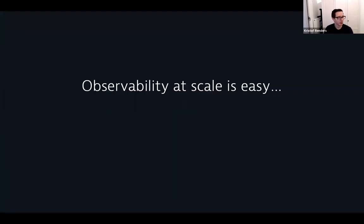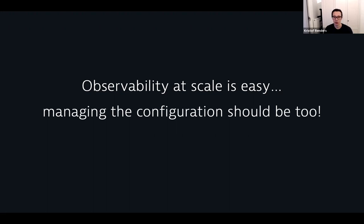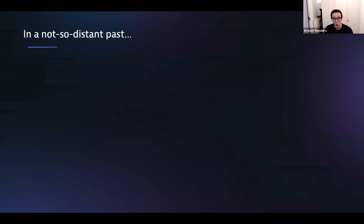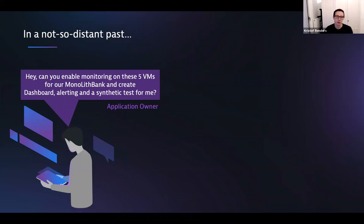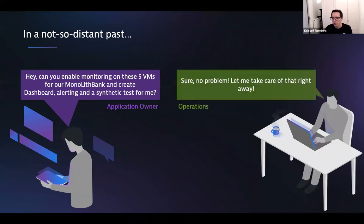Now, observability is not only a case of deploying our OneAgent. It should also be easy to manage the configuration, and that is what this topic is about today. In a not so distant past, we were dealing not with microservices but with monolithic applications. As an application owner, you had a certain set of requirements — you want to monitor your application. So you would go to the operations team and say, hey, can you please monitor this application for me? Create some dashboards, set up some alerting, maybe some synthetic tests. Then the operations person — let's call them Bob — would go in and happily create all of that for you.